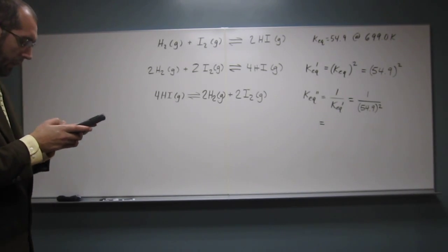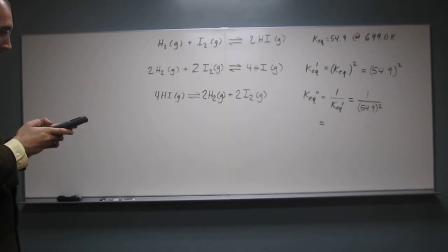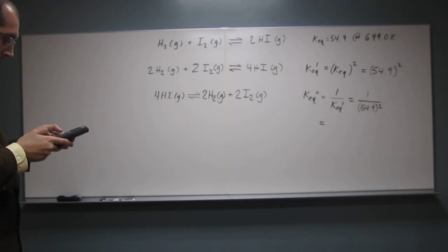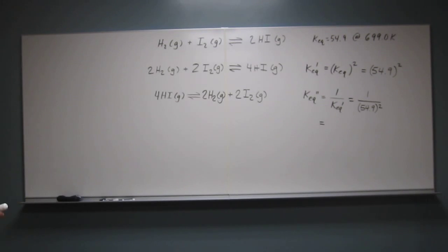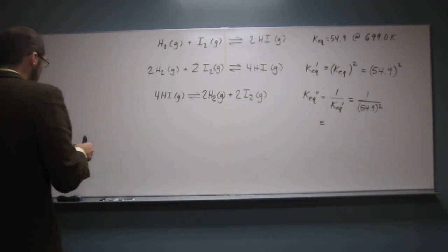So 54.9, square that, divide that. And when I do that, I get to what? 3 significant figures.